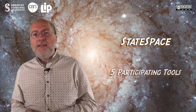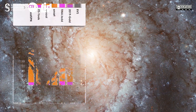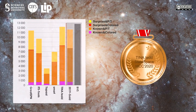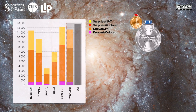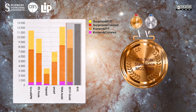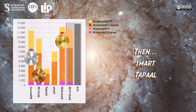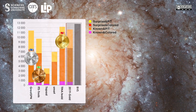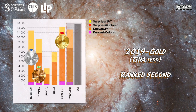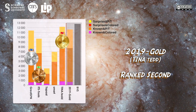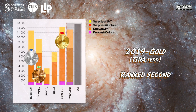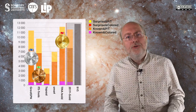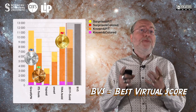Let us now discover the results of this edition. For the state space examination, five tools did participate. The gold medal goes to TINA-TED, then GreatSPN grabs the silver one, and ITS-Tool gets the bronze medal. They are followed by SMART and TAPAL. The 2019 gold medal was TINA-TED and it would have been ranked second, so its developers have increased its performance.